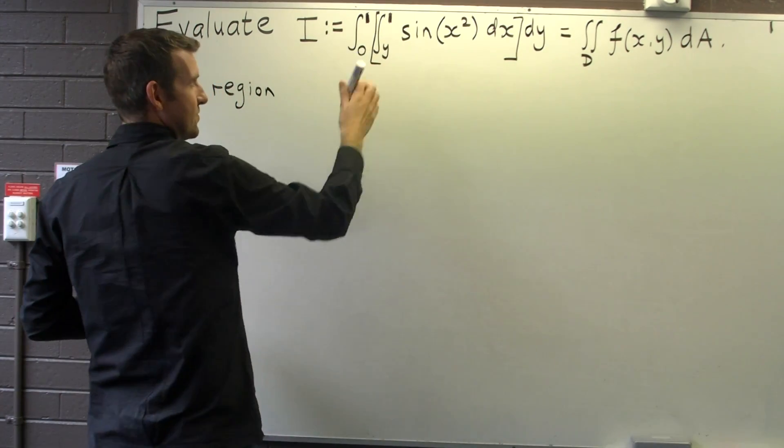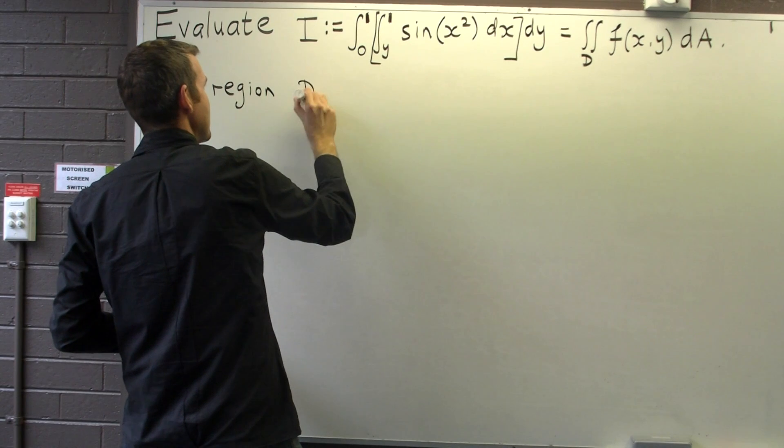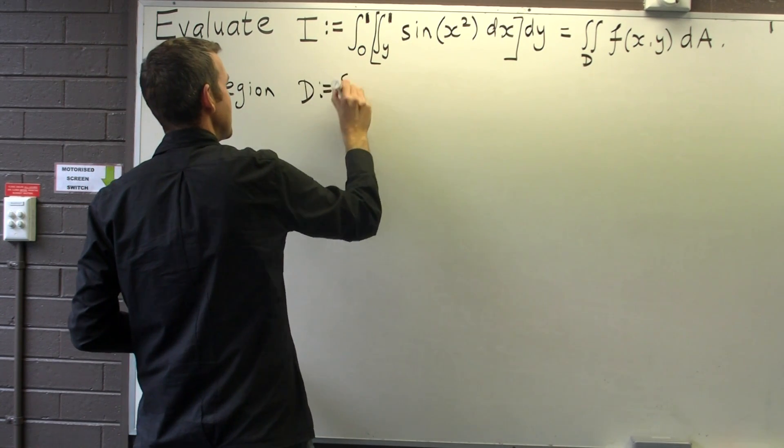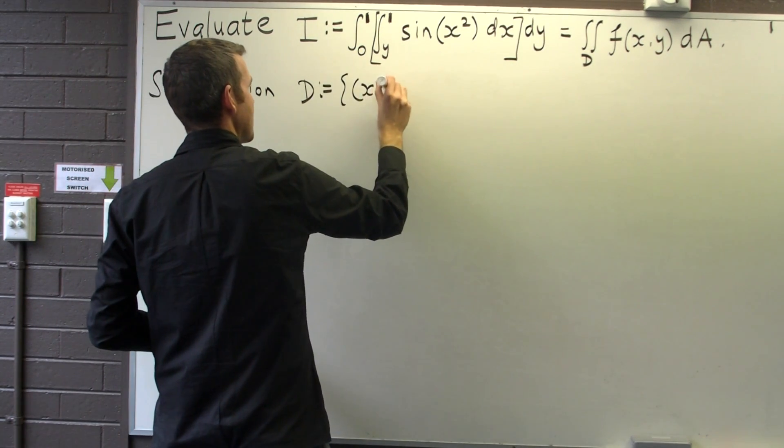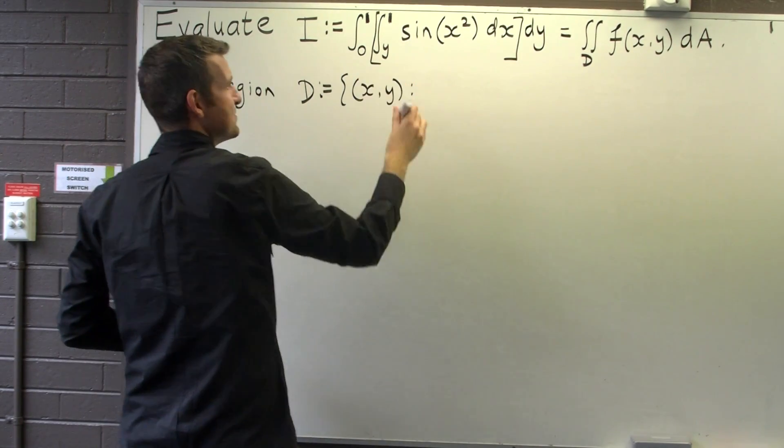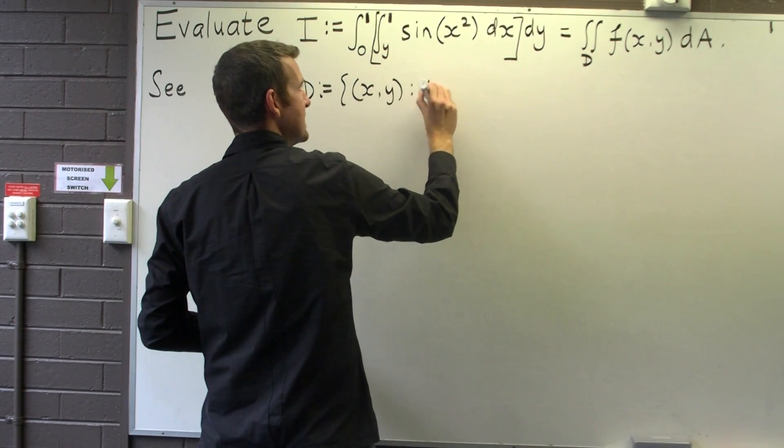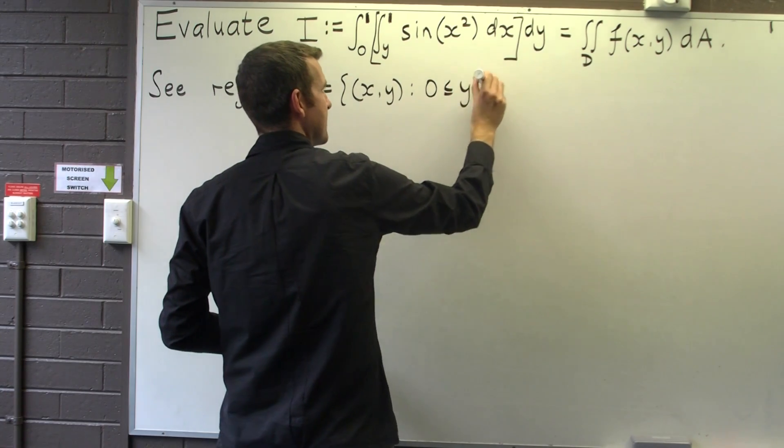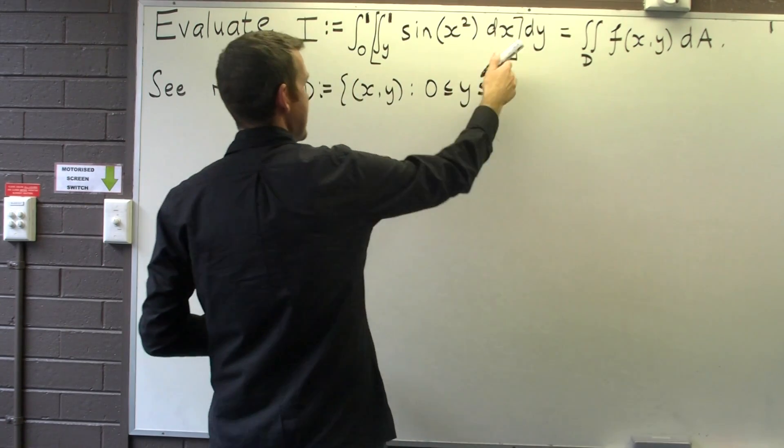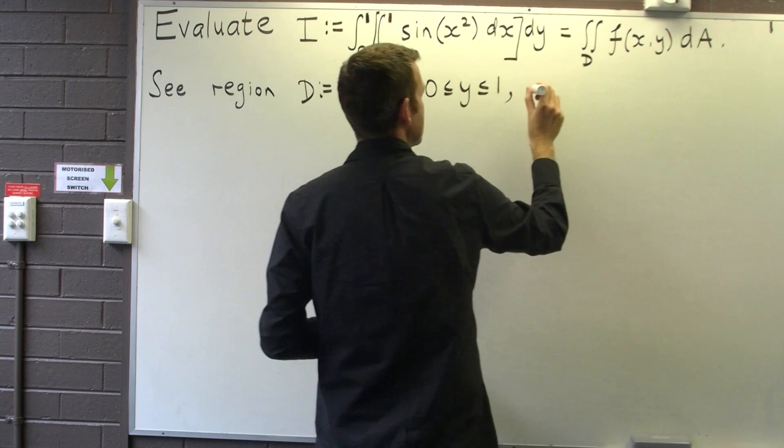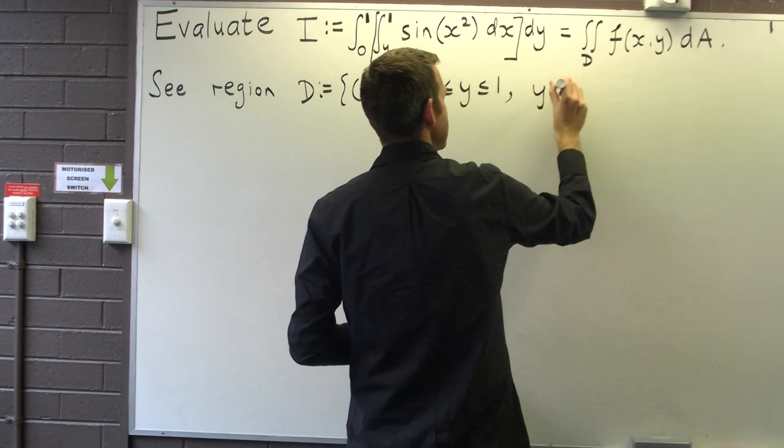So at the moment, under this form, our region D is just y is between 0 and 1, and x is between y and 1.